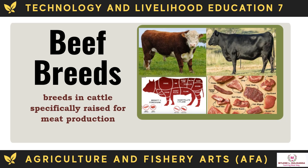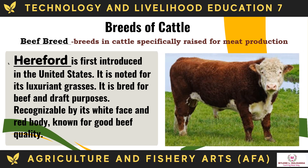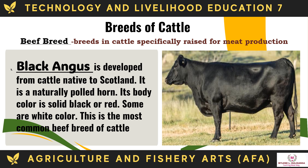The beef breeds of cattle are breeds specifically raised for meat production. The Hereford was first introduced in the United States, noted for its luxuriant grasses, and bred for beef and draft purposes. It is recognizable by its white face and red body, known for good beef quality. Black Angus is developed from cattle native to Scotland; it is naturally polled. Its body color is solid black or red, and it is the most common beef breed of cattle.